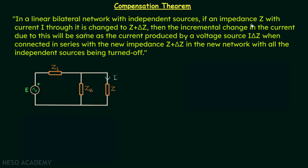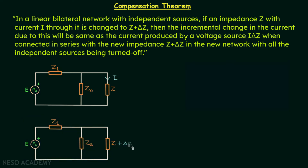The impedance Z should now change to Z plus delta Z. When we make this change, all the currents in this network will change. Let's say the current through this impedance is now I prime — it was I initially, and after the change it is I prime. So the incremental change delta I will be equal to I minus I prime.